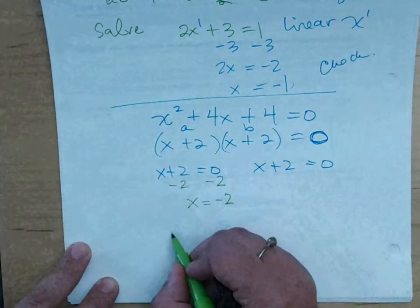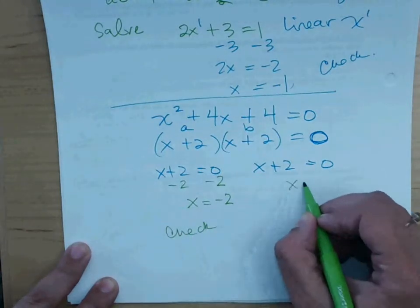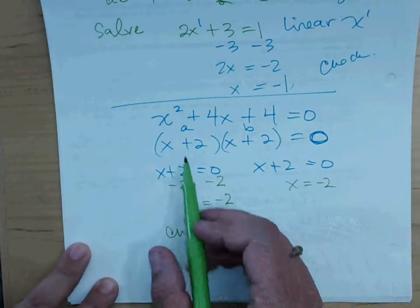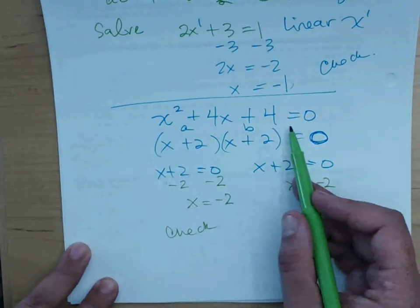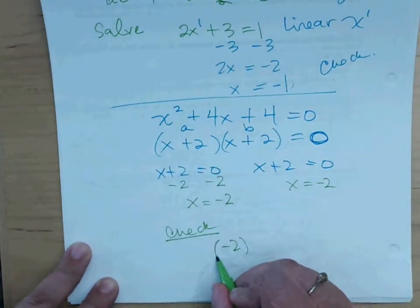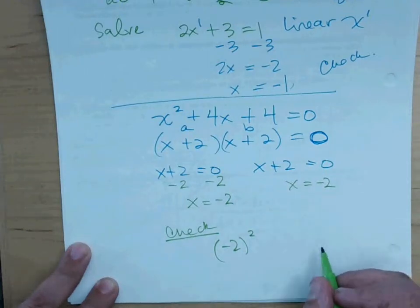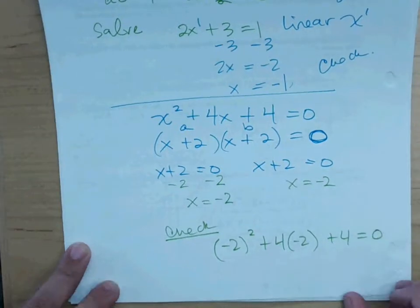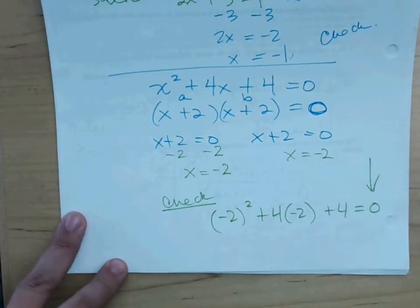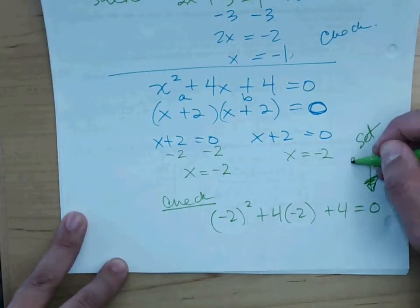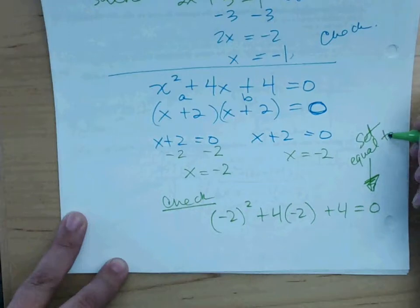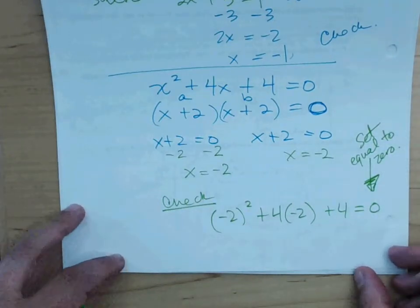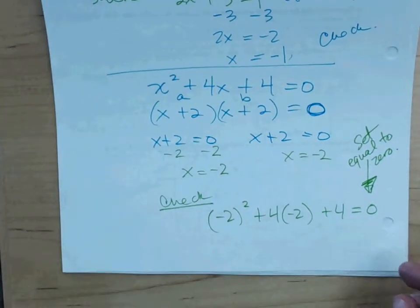If I plug in, and by the way, it would be the same thing here, right? Just because my factors are exactly the same. If I plug in negative 2 to check, I would get negative 2 squared plus 4 times negative 2 plus 4 should give me zero. And this is, by the way, the reason why the zero product property is the reason why we always set equal to zero. Because zero is the only number that we know conclusively. If I multiply it by a number, I'm going to get zero. I have to, right?